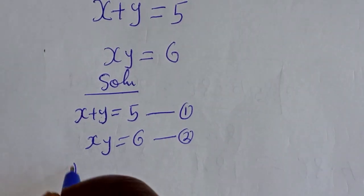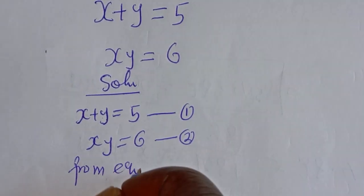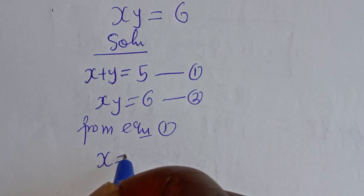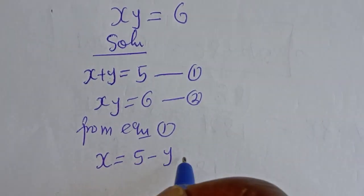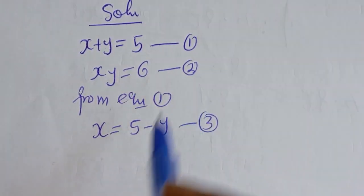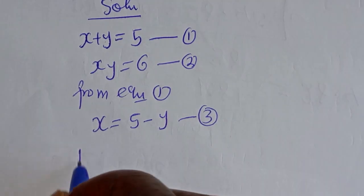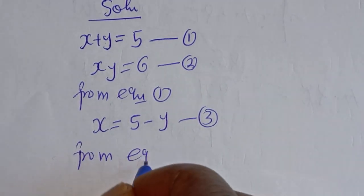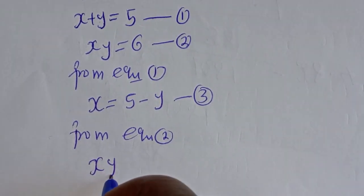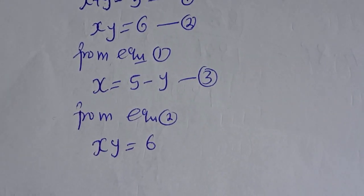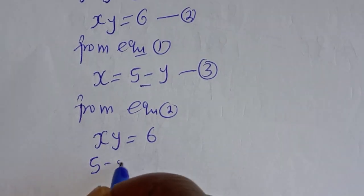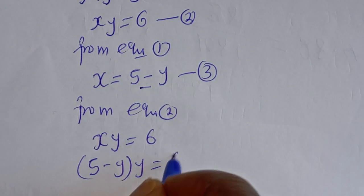Then from equation 1, S is equal to 5 minus Y — let's call this equation 3. Now we want to substitute equation 3 into equation 2. From equation 2, X times Y is equal to 6. Then when X is replaced by equation 3, we have 5 minus Y, bracket Y, is equal to 6.